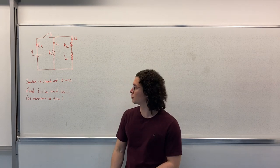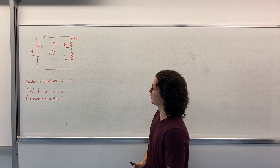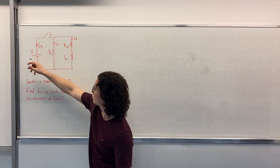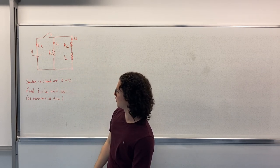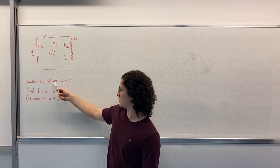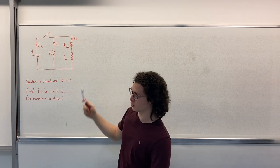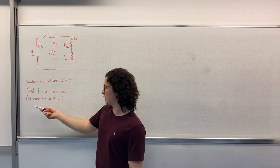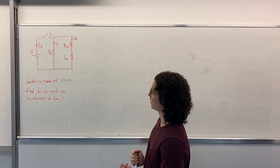Hello guys, so today we will be solving a problem from RL circuit. Here we have a circuit which contains a voltage source, two resistors and an inductor. The switch is closed at t equals to zero, which means we have initial currents as zero. And we are asked to find those currents as a function of time. So, let's start.